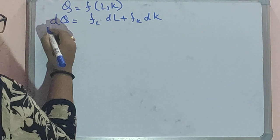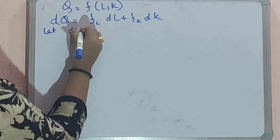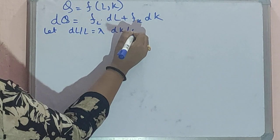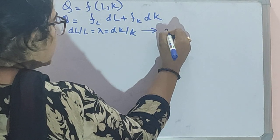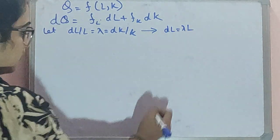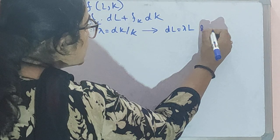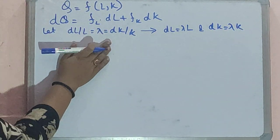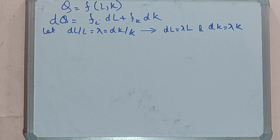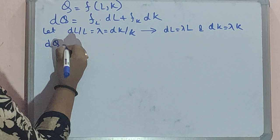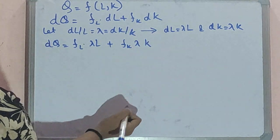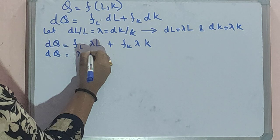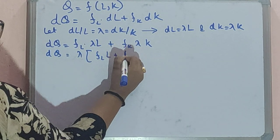Now let dL/L = λ and dK/K = λ. So λ = dL/L = dK/K, from which we get dL = λL and dK = λK. Putting these values into the total differential, dQ = FL·(λL) + FK·(λK). Taking λ common: dQ = λ(FL·L + FK·K).